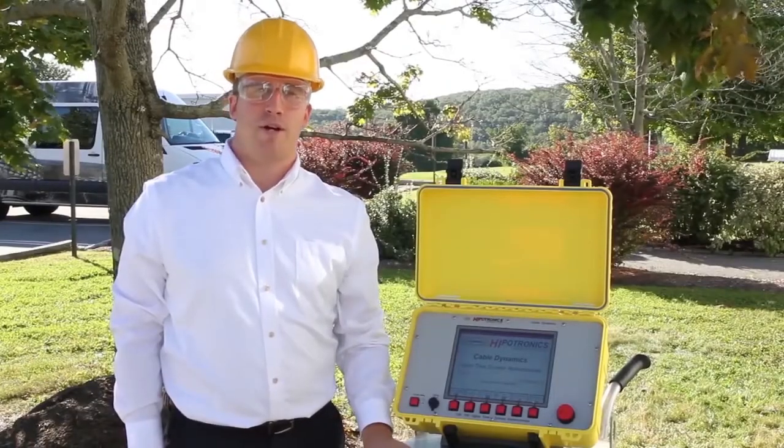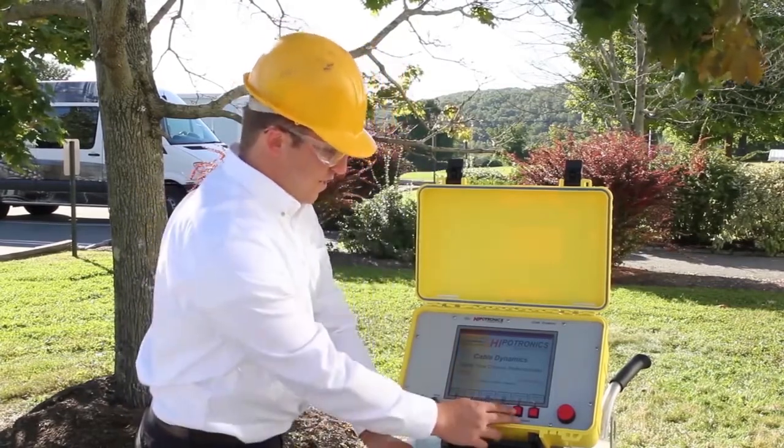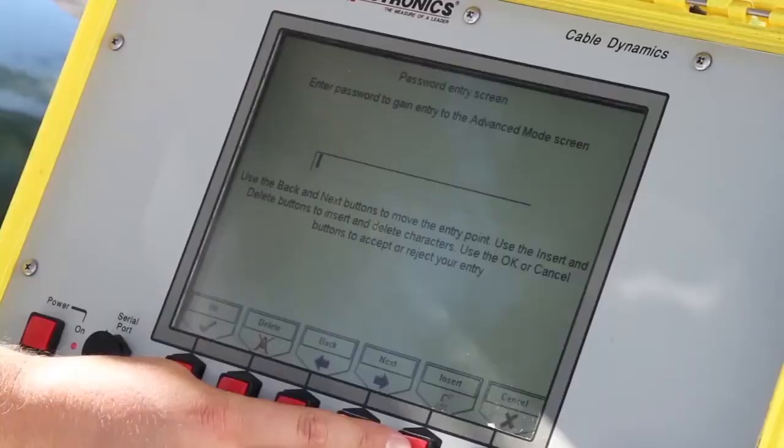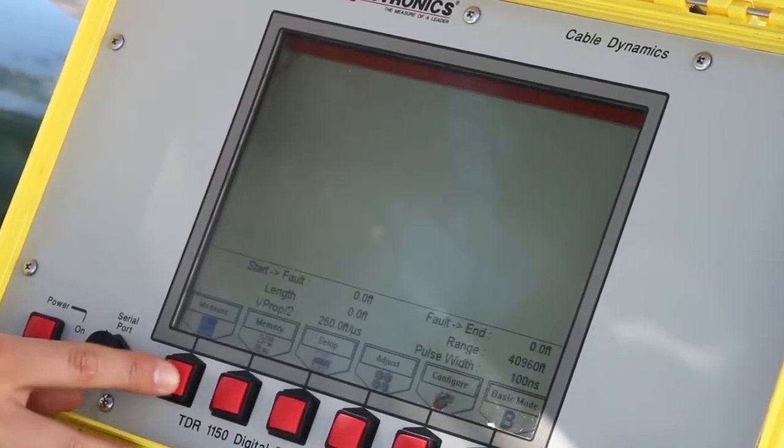Once the TDR is powered on, we can begin operating the unit in advanced mode. First, press advanced mode. If your 5250 is password protected, enter the password. If not, press OK.